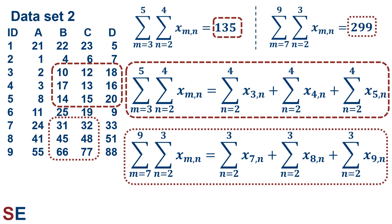This slide summarizes what we're doing: double summations represent rectangles in our data table. Our first double summation, represented by the dashed line for rows 3 to 5 and columns 2 to 4, gives 135. The second, represented by the dotted line for rows 7 to 9 and columns 2 to 3, gives 299. For each, we can expand the double summation into single summations that are much easier to work with.